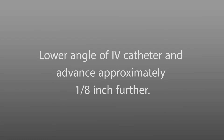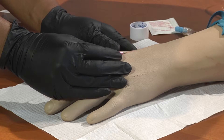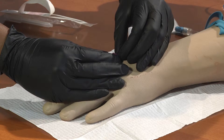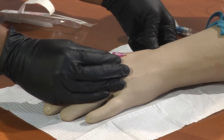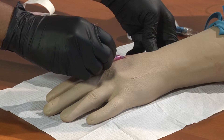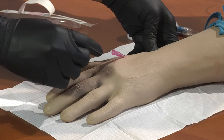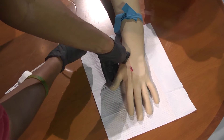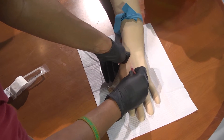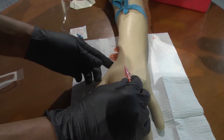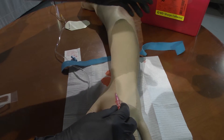Lower the angle of the IV catheter and advance approximately 1/8 of an inch further. Stabilize IV catheter and slide catheter off of stylet by grasping the hub and advancing until the hub touches skin. Occlude proximal vein at distal tip of catheter. Remove stylet and dispose in sharps box. Remove protective cover from distal end of administration set and attach to hub of catheter while maintaining sterility. Release occlusion and release tourniquet. Open flow clamp and run for a brief period to assure a patent line.